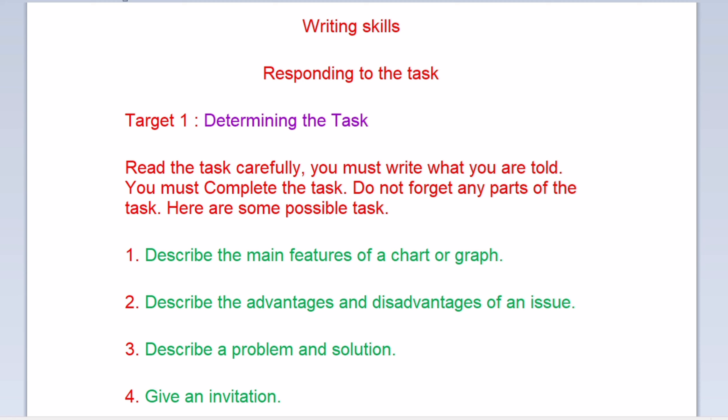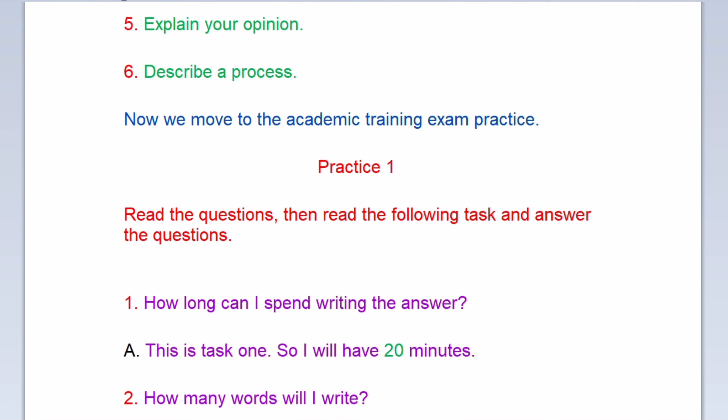Here are some possible tasks. Number one: Describe the main features of a chart or graph. Number two: Describe the advantages and disadvantages of an issue. Number three: Describe a problem and solution. Number four: Give an invitation. Number five: Explain your opinion. Number six: Describe a process.